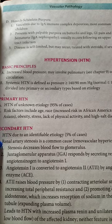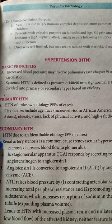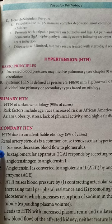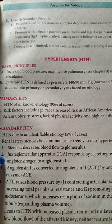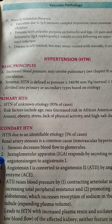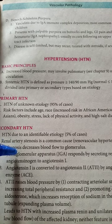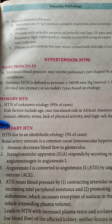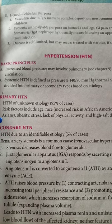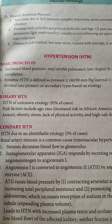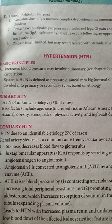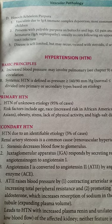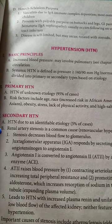Secondary hypertension has an identifiable etiology. It can be caused by renal artery stenosis, or by the conversion of angiotensin 1 into angiotensin 2 via the angiotensin converting enzyme. The process and etiology of secondary hypertension will be further explained.